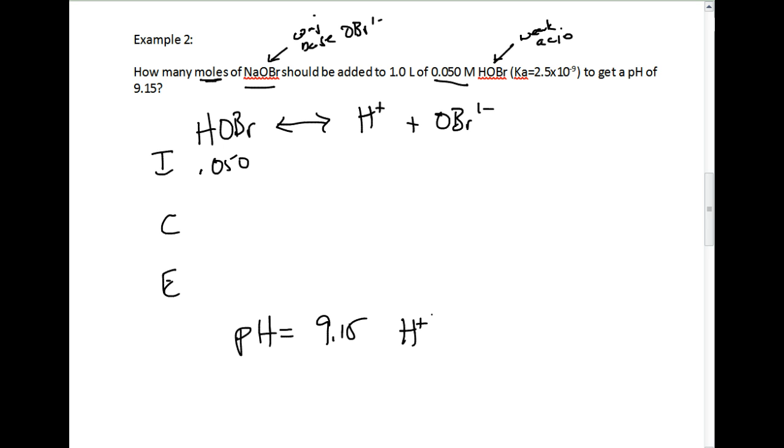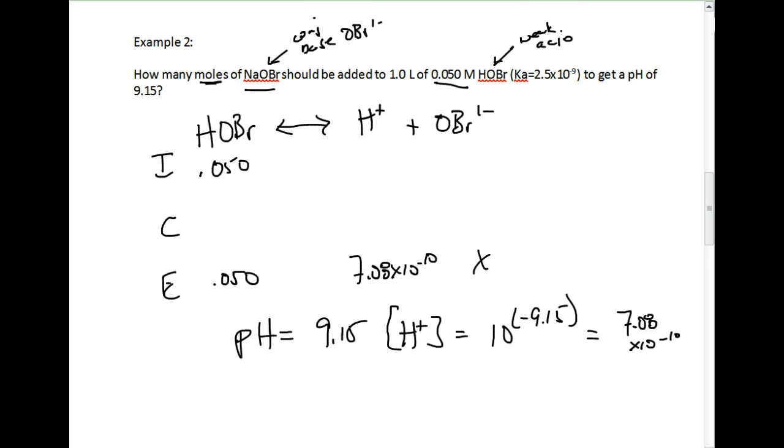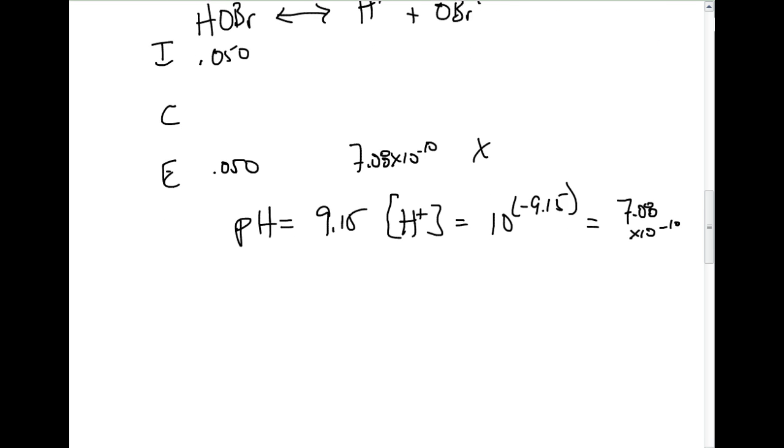To get the hydrogen ion concentration, we're just going to take the antilog. That gives us a concentration of the hydrogen ion as 7.08 times 10 to the negative 10th. And 7.08 times 10 to the negative 10th is going to be there, 0.050. We're looking for x right there. We're going to use that in our Ka expression.